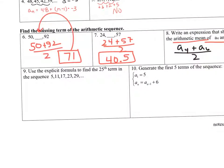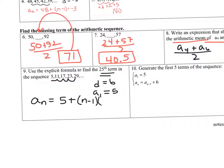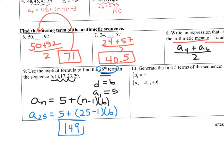Problem 9: Use the explicit formula to find the 25th term. The sequence goes up by 6, so d equals 6, and the first term is 5. The explicit formula is a sub n equals 5 plus (n minus 1) times 6. To find the 25th term, plug in 25: a sub 25 equals 5 plus (25 minus 1) times 6. Calculate that and you get 149 — the 25th term is 149.